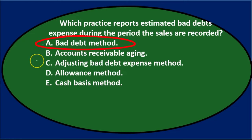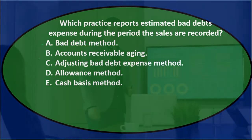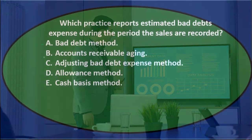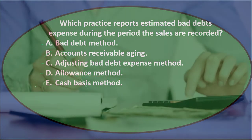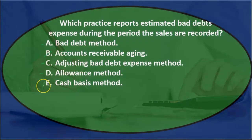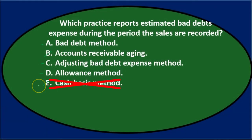A, bad debt method — I'll keep that for now. B, accounts receivable aging — that's more like a report we might use to help us, not really a method, so I'll eliminate that. C, adjusting bad debt expense method — I'll keep that for now. D, allowance method — that sounds familiar, I'll keep that. E, cash basis method — that's a method for normal accrual versus cash basis, not specific to bad debts, so eliminate it. We're left with A, C, and D.